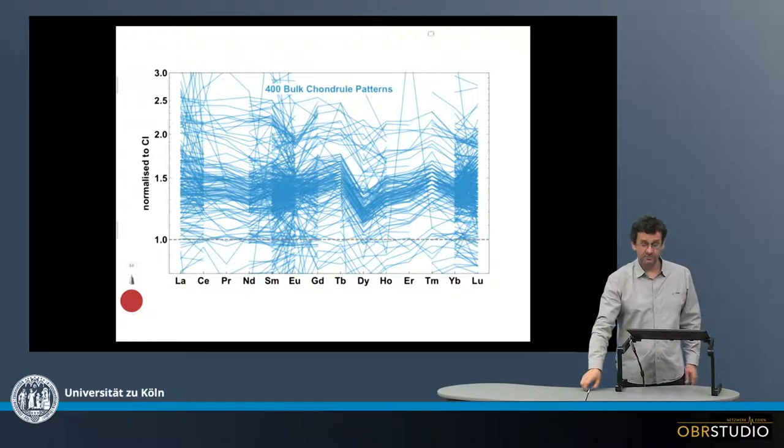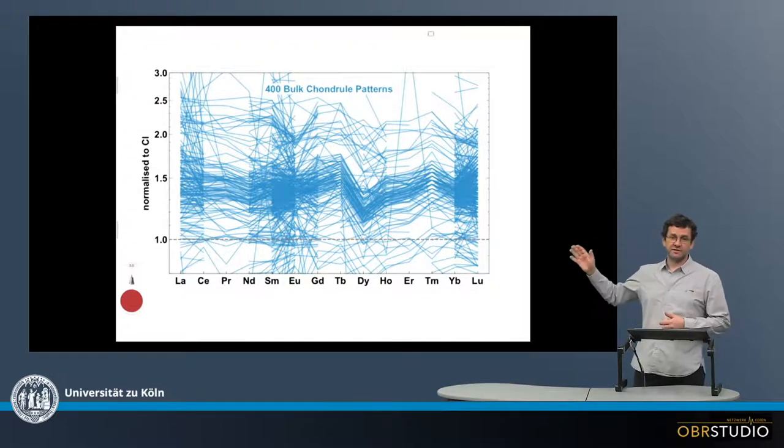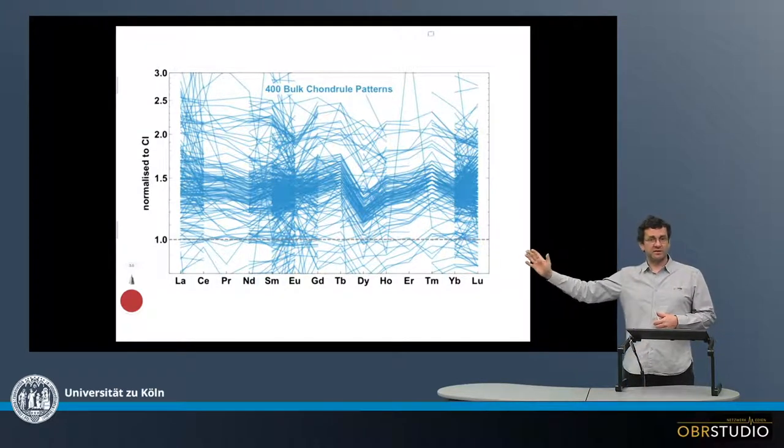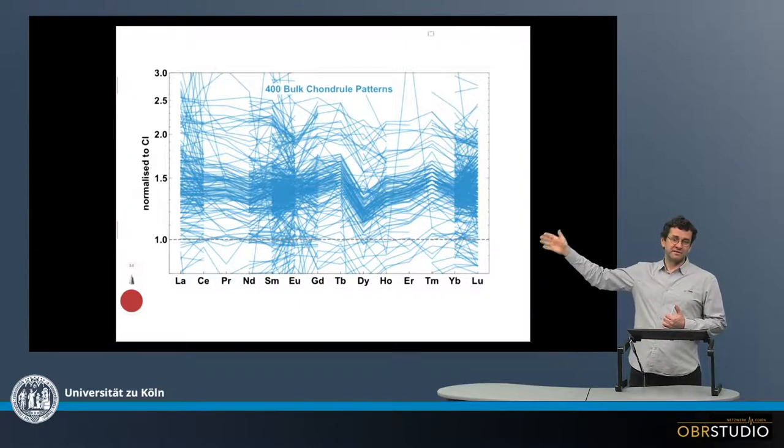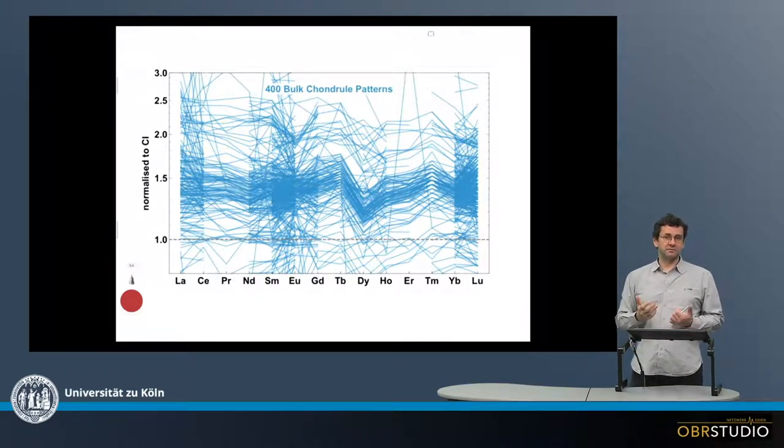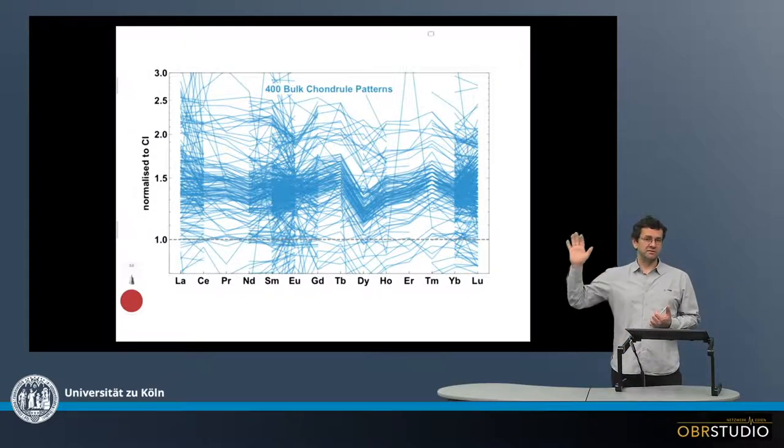So let's have a closer look. First of all, this is a category plot. So on the x-axis, there are categories which are in this case the various rare earth elements. On the y-axis, there is a concentration of the element, normalized to C-i chondrite.